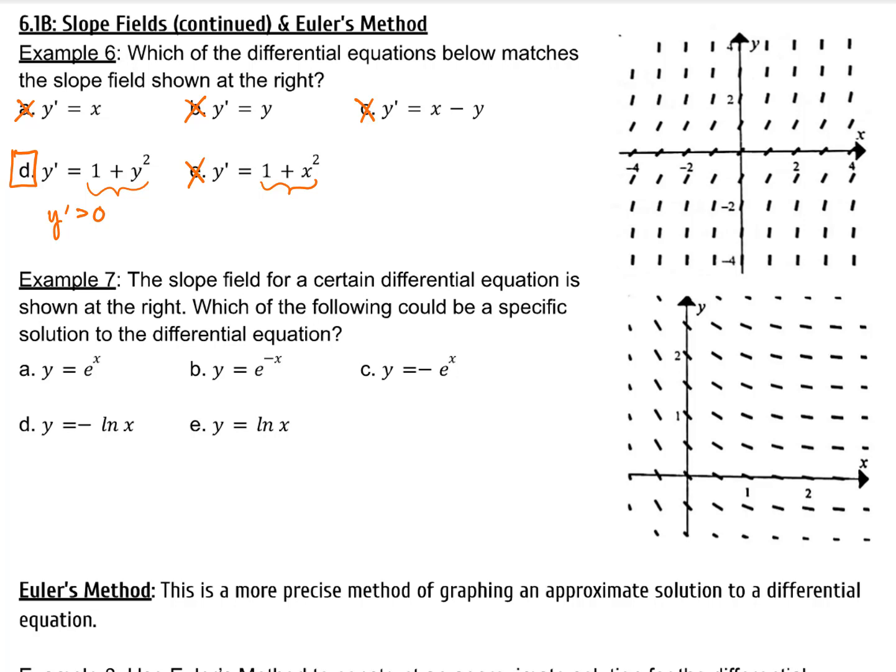e^x is a positive exponential graph with y-intercept of 1. e^(-x) is reflected about the y-axis. Wow, it looks like B might be our answer.